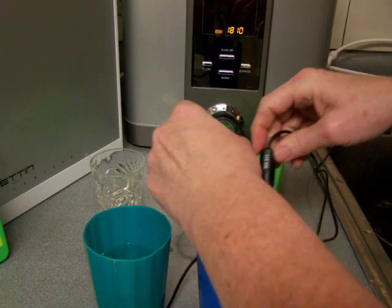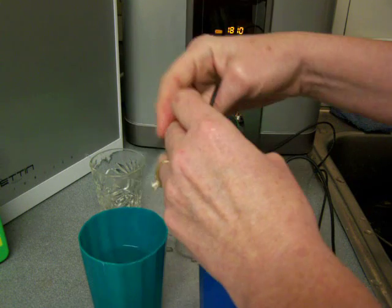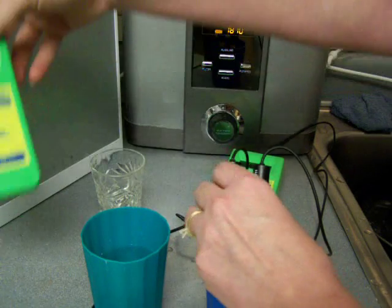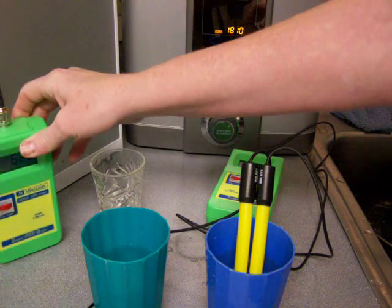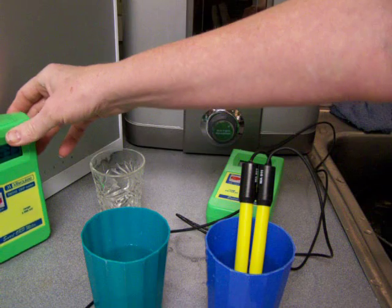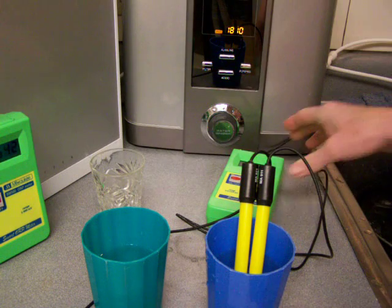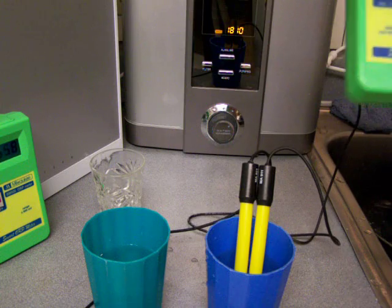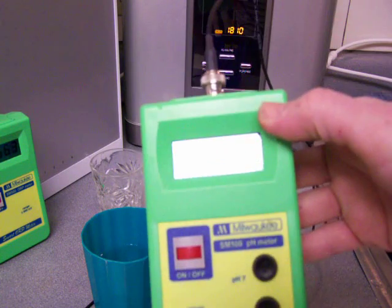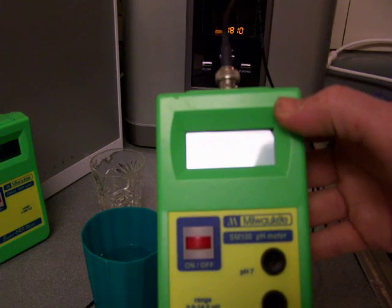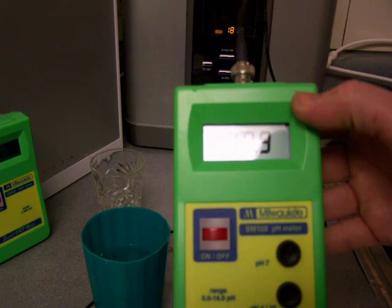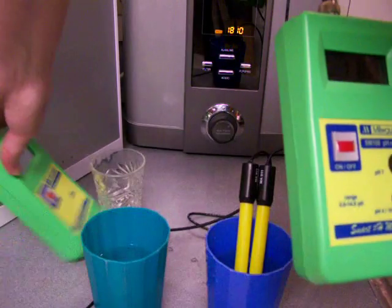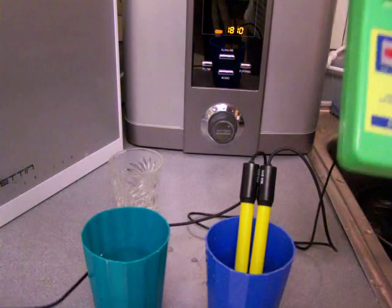So on the left is the ORP meter and on the right is the pH. That's the Athena and it looks like it's coming in at 10.9 or 11, in between those two. It doesn't make up its mind I suppose.